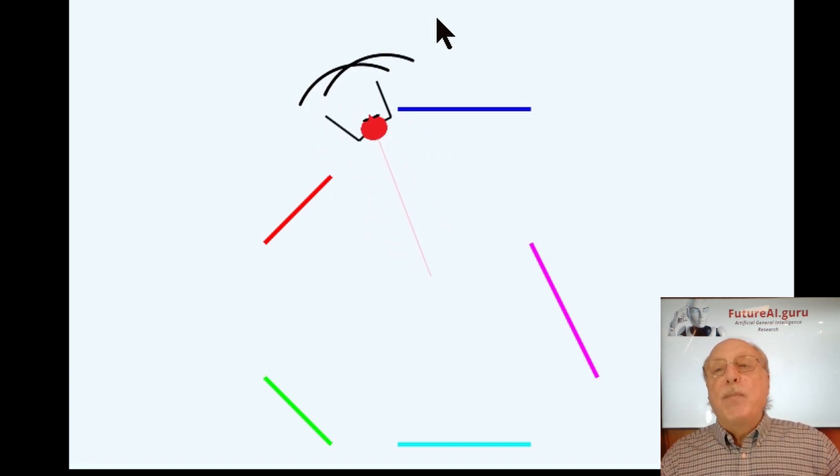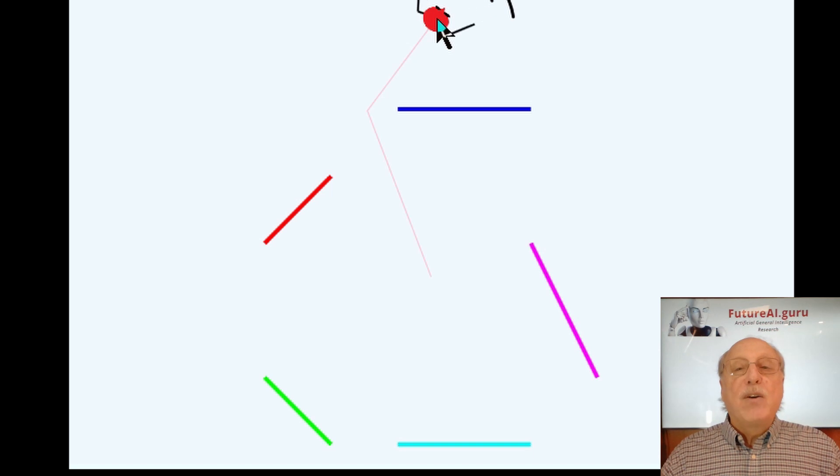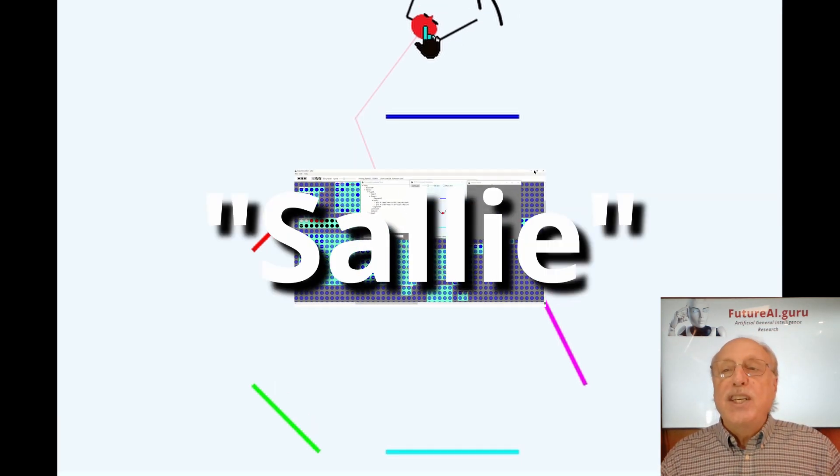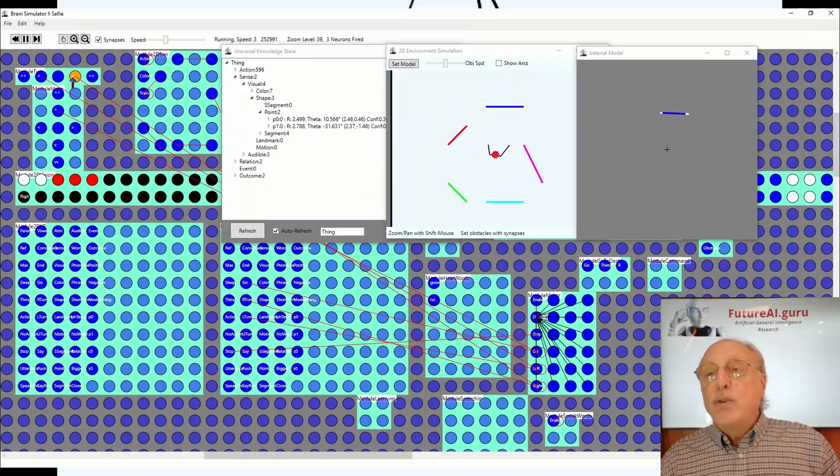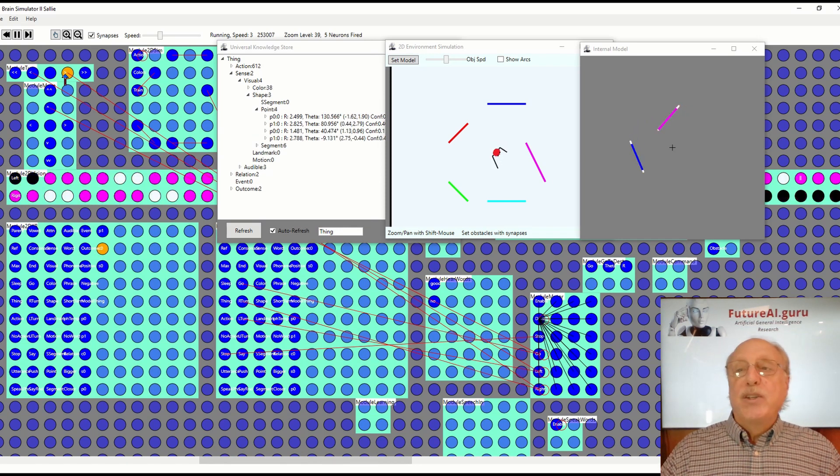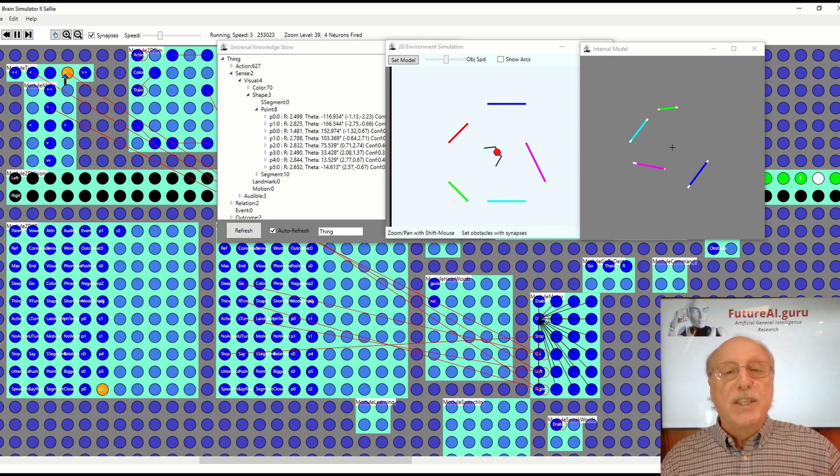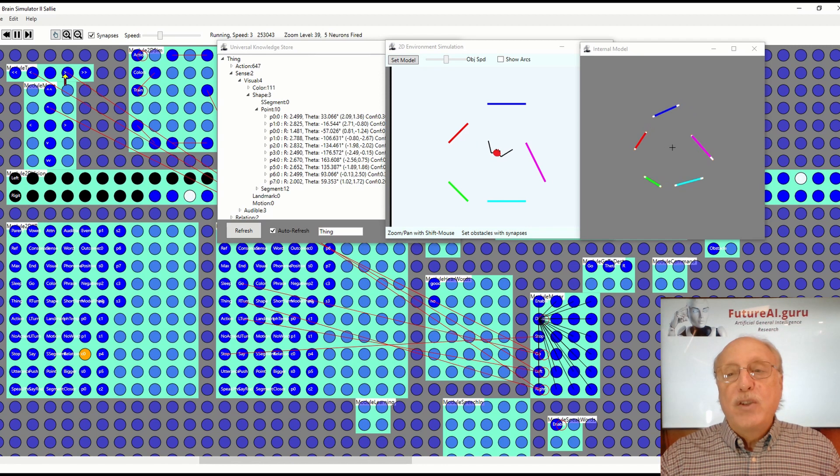With these combined abilities there is a basic virtual entity I call Sally. Sally can hear, speak, see, and touch her environment. Today Sally lives in two dimensions, but when Sally seems to comprehend objects in her 2D environment we can advance to 3D or real-world senses. Everything Sally learns is retained in the Universal Knowledge Store.